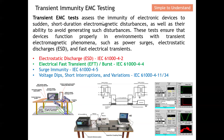Transient EMC testing mainly assesses the immunity of your electronics device to sudden, short-duration — can be micro or nanosecond — electromagnetic disturbances, as well as their ability to avoid generating such disturbances. Once you build your DUT, you test them under a quick short duration and see whether your DUT can still function. You also need to ensure your DUT will avoid generating such disturbances to neighboring devices. This test ensures the device functions properly in an environment with transient electromagnetic phenomena, such as power surge, electrostatic discharge, and fast electrical transients.